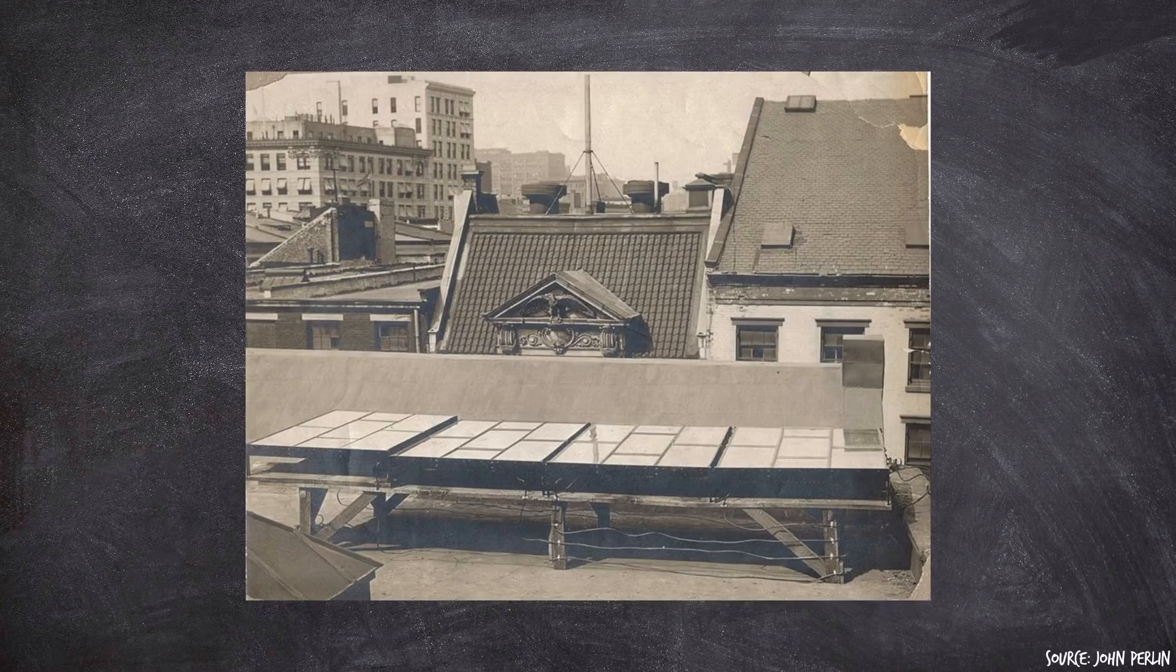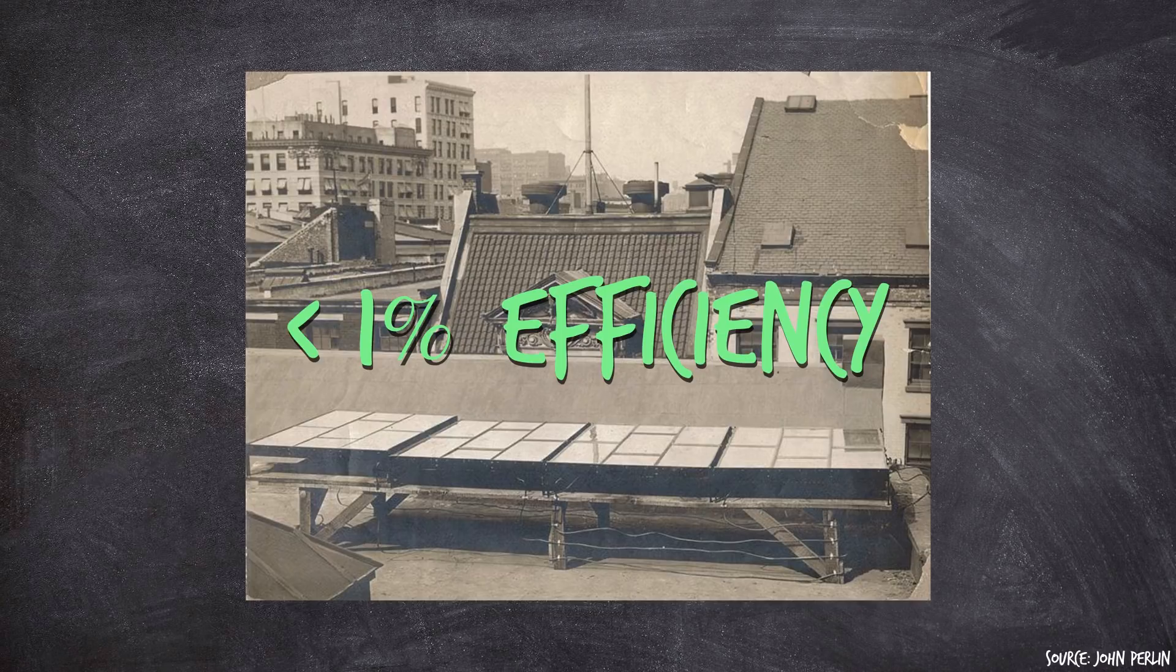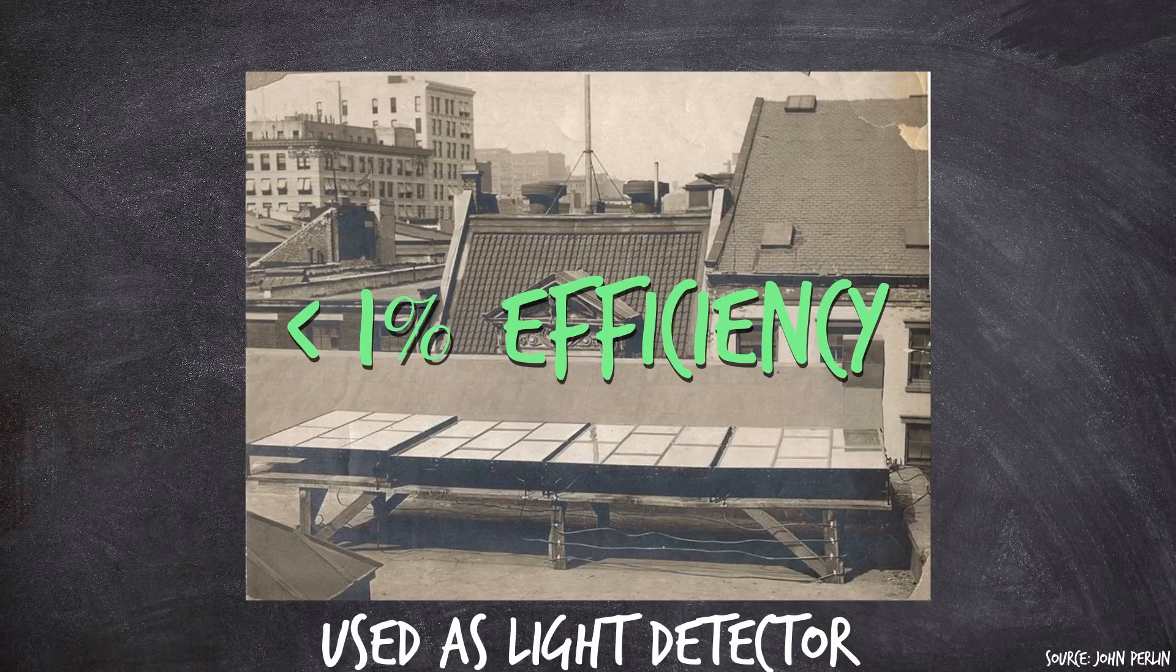Now, Fritz's cell had a sunlight conversion efficiency of like 1%, which is pretty terrible for the purposes of generating energy, but it could and was, at least, used as an electrical light detector, what we call a photodiode today. But so the first cell was in 1883, but then what happened? Well, if you then kept reading your historical timeline, you'd find nothing.